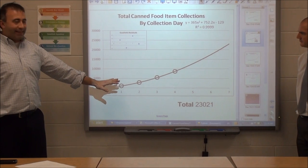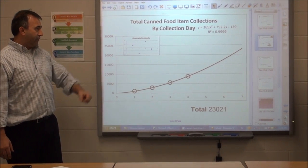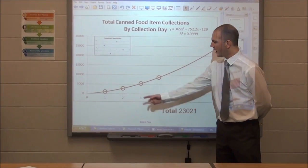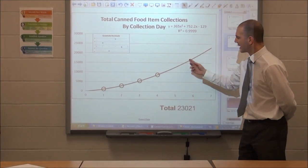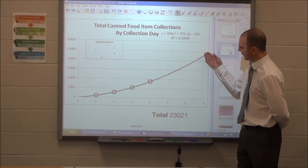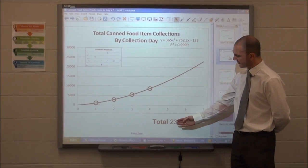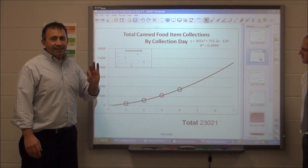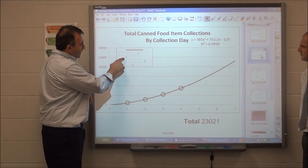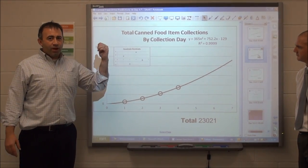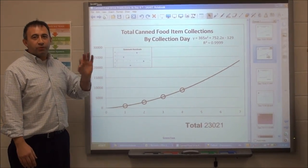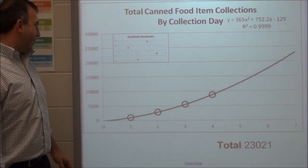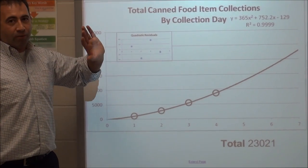Using the same data, we're doing a different fit — a quadratic model to try and explain this. As we can see, our data fits very well; the points are very close to the line. Extrapolating and following this function to day seven, we're going to predict a total of 23,000 cans. Looking at the residuals again, the scale here is a lot different — the linear model had residuals of about 400 to 500, whereas this one is only about 20 near the start and only about 40 near the end, and then it's pretty random.